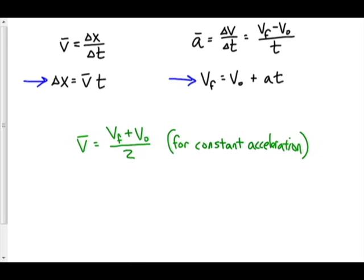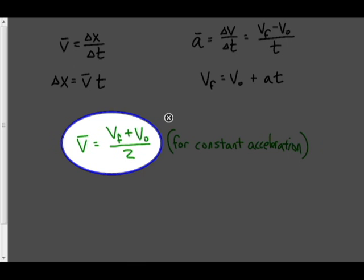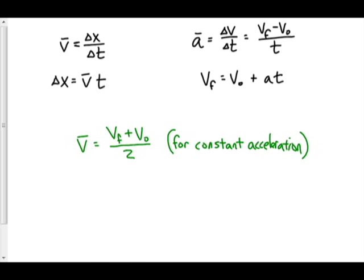It shouldn't take too much to convince yourself of that. But this one here, for constant acceleration only, it would make sense to us that we can find the average velocity by just merely taking the average of the initial and the final velocity. So adding them up and dividing by two, as you would take to find the average of two things.